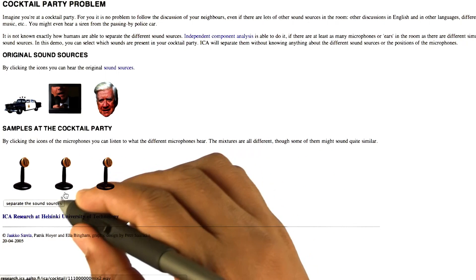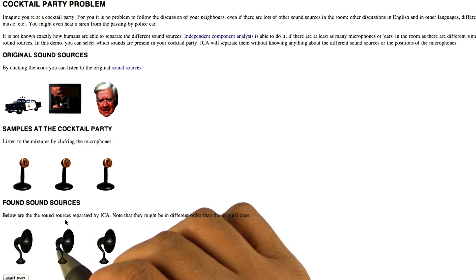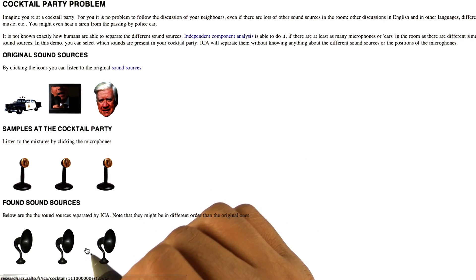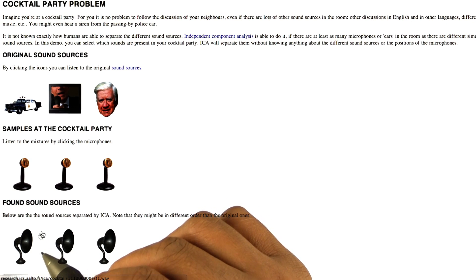So we're going to use ICA now to separate the sound sources. And as you see, we get these little gramophone things. And I'm going to play each one of these and see if they did a good job of separating us into the original sources.